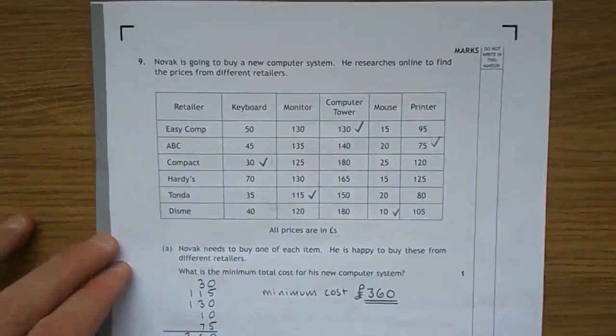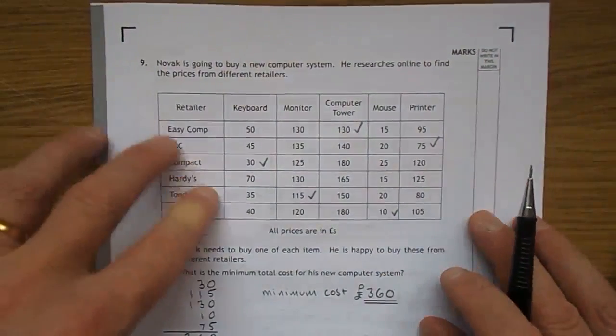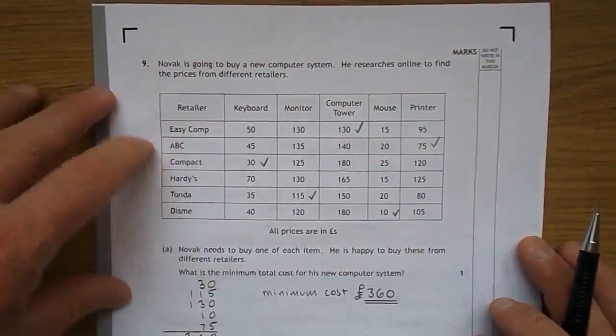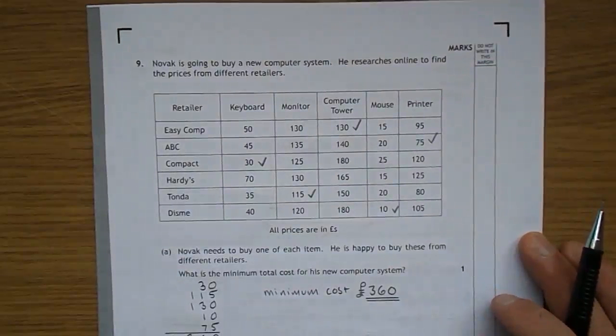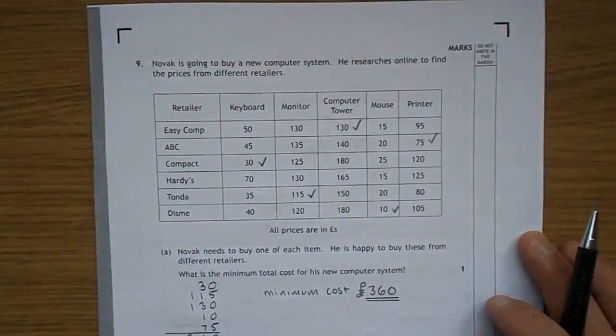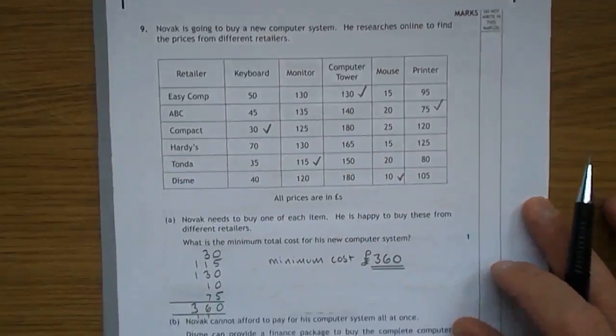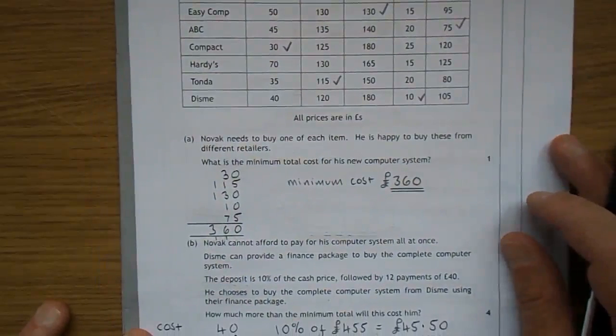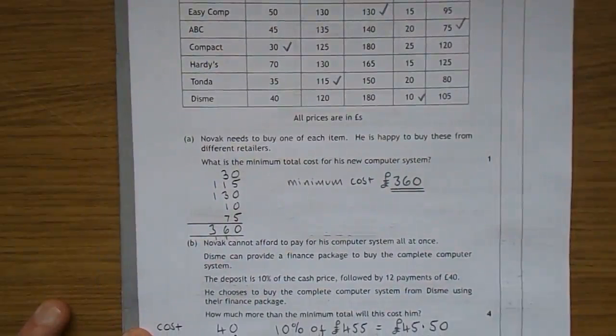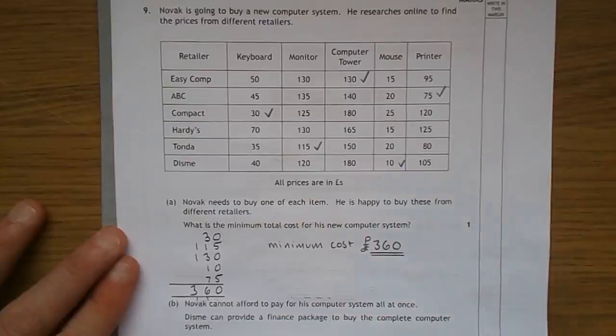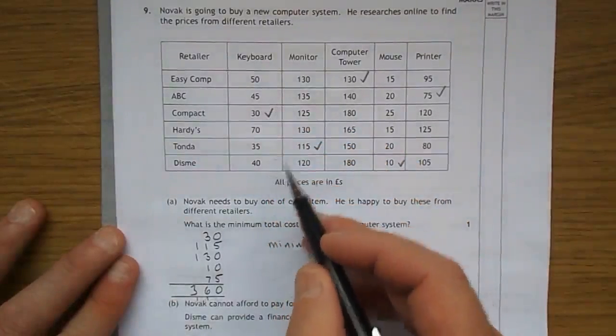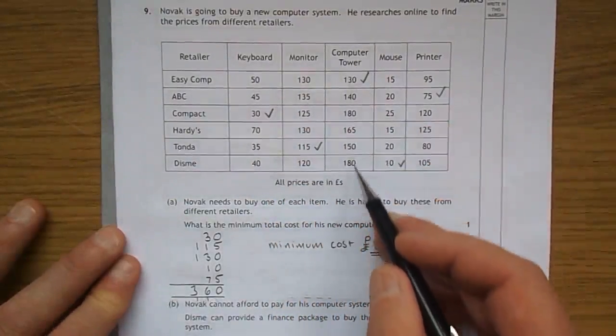Let's have a look at number 9. Novak is going to buy a new computer system. He researches online to find the prices from different resellers, and you're given a big table there with lots of different retailers and the prices of keyboard, monitors, computer tower, mouse, and printer. Novak needs to buy one of each item. He's happy to buy these from different retailers. What's the minimum cost for his new computer system?